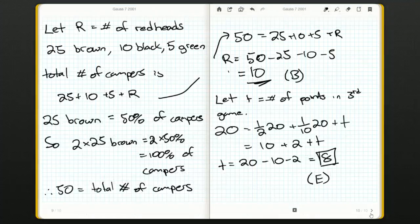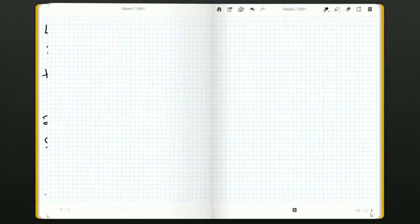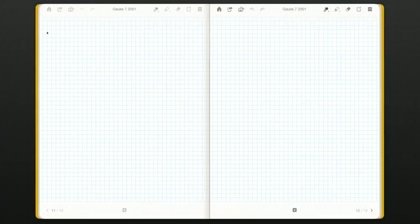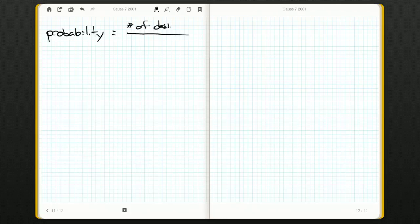So if we want to figure out probability, the probability of something happening is always equal to the number of outcomes. So the number of desired outcomes over the number of possible outcomes.